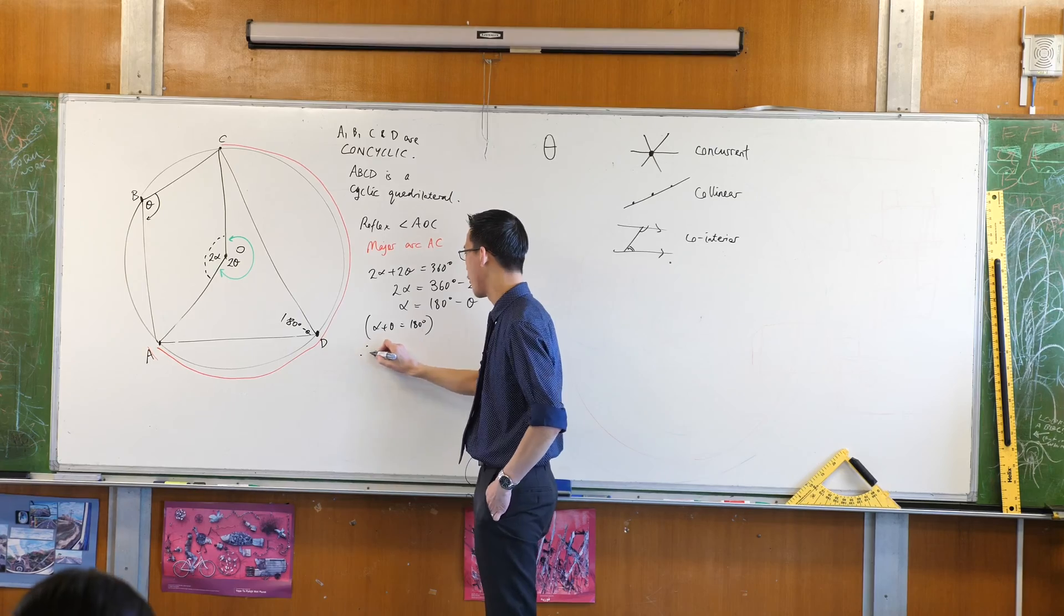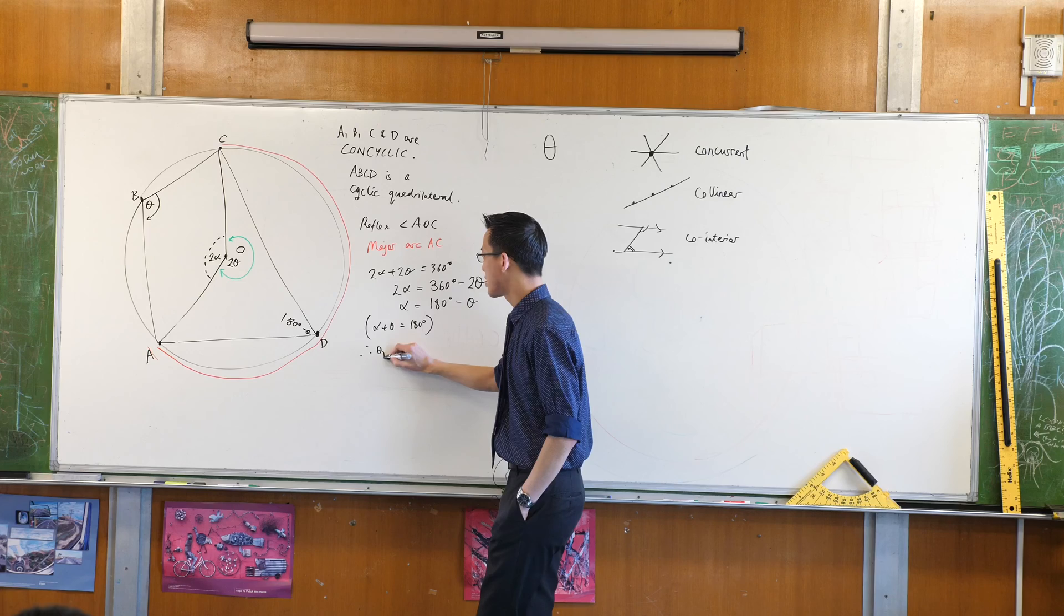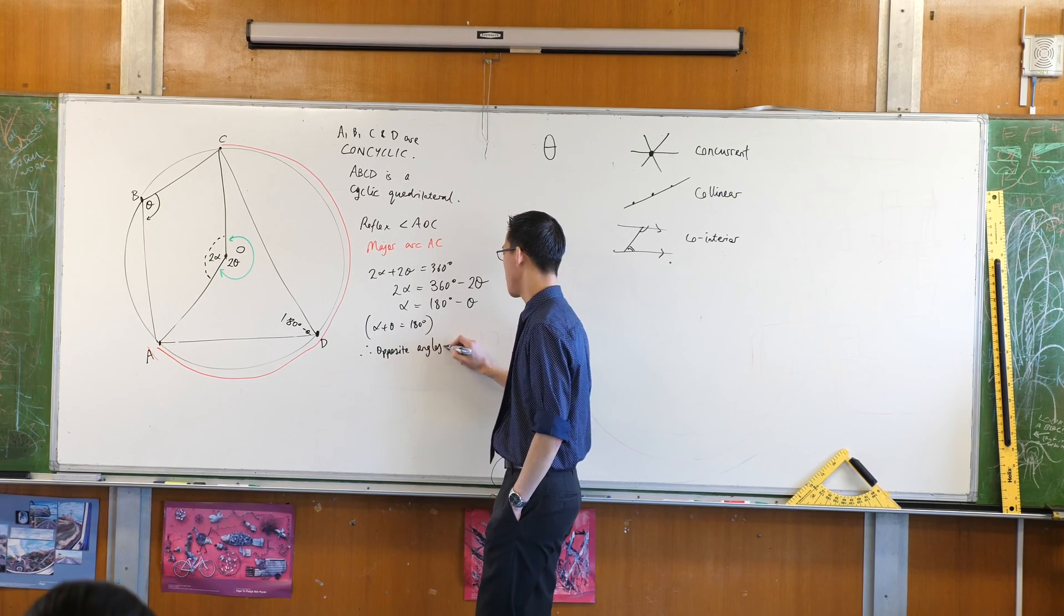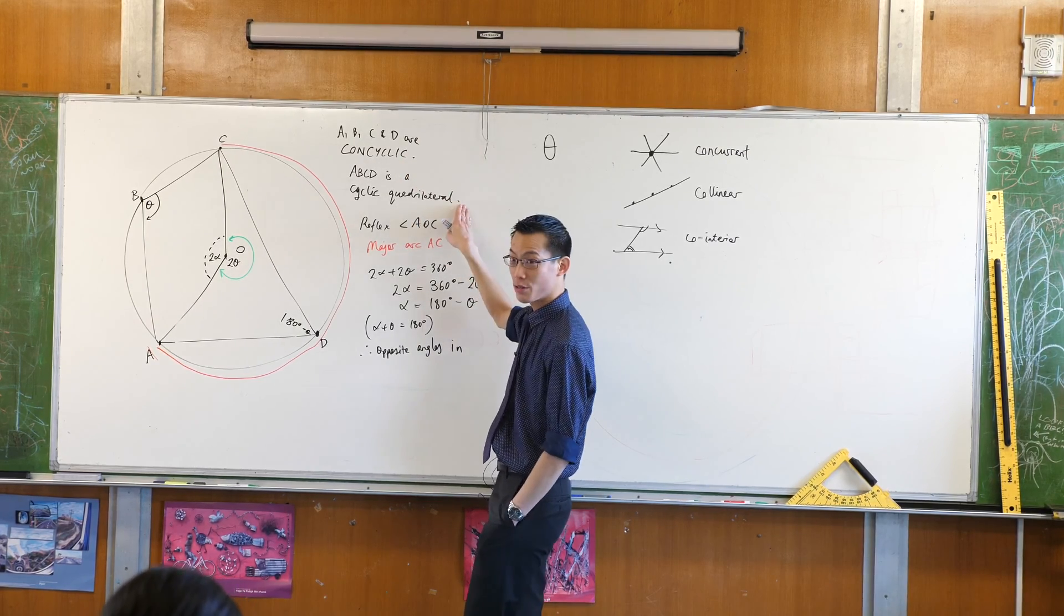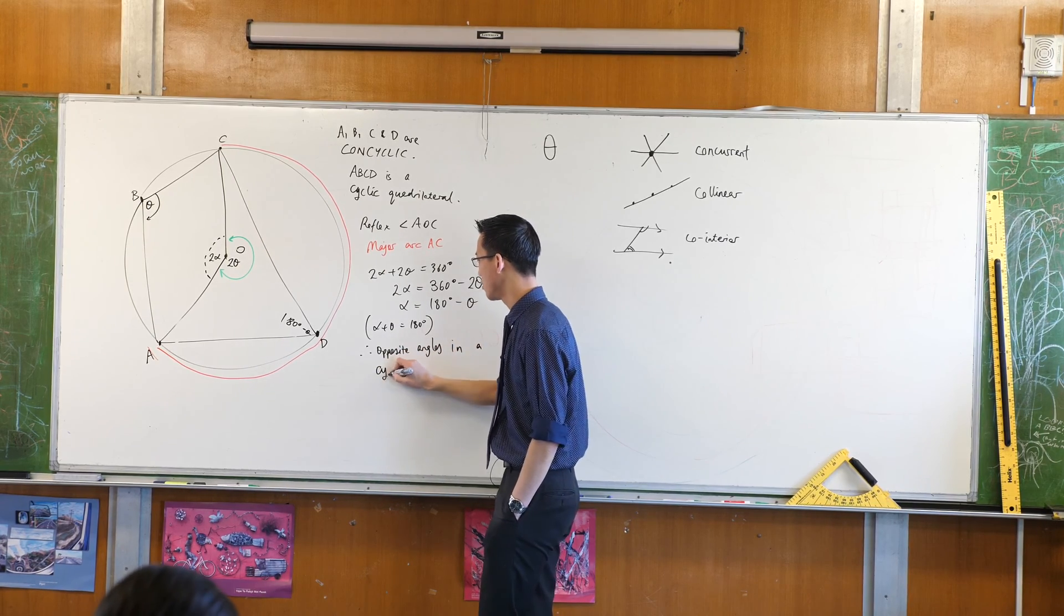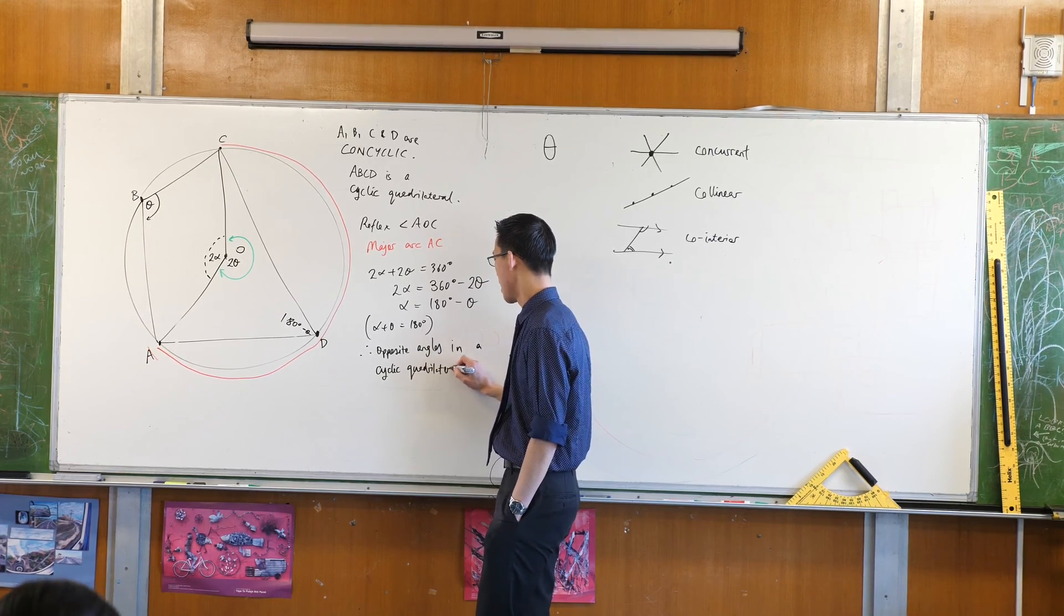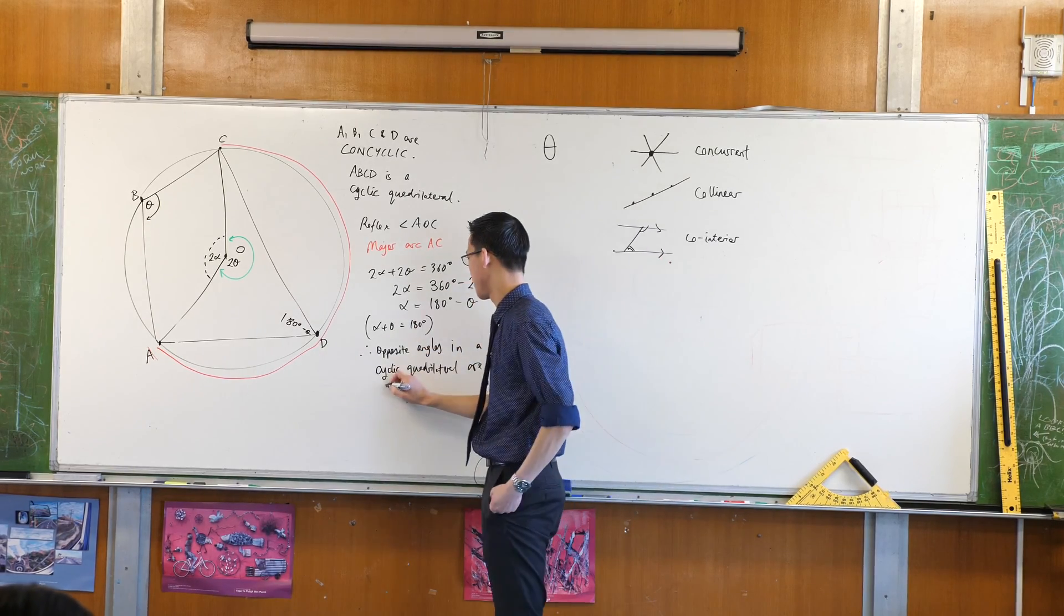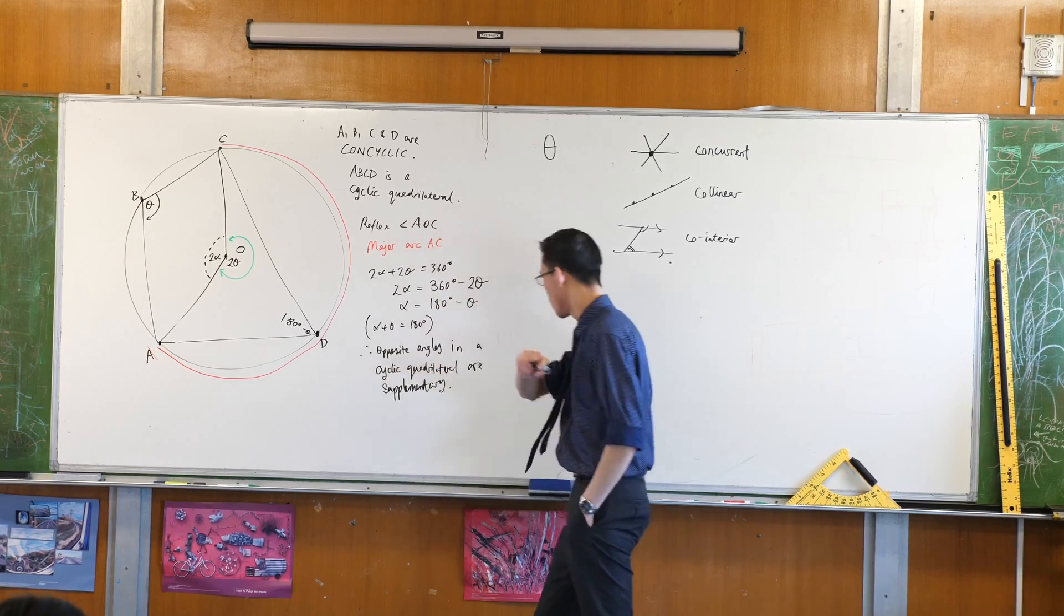So therefore, the property you get out of this, therefore, and now that we've proved this, we can quote it anytime we like. Opposite angles in what kind of shape is this? It's a cyclic quadrilateral. It's not just any quadrilateral. All the points are cyclic. Opposite angles in a cyclic quadrilateral. What was the relationship? They add to 180, so that's supplementary. Okay, lovely.